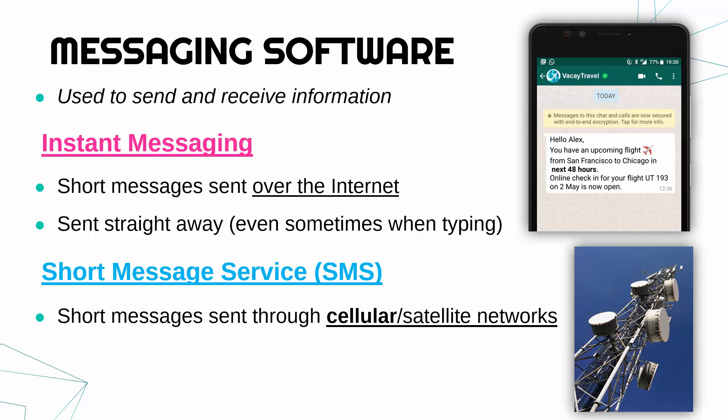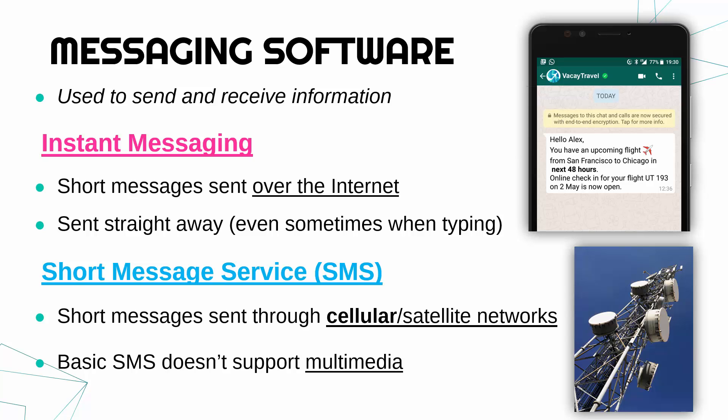Most phones support both the internet and the cellular network. If you send a text message it goes through the cellular network. Basic SMS doesn't support multimedia — where you've got a mix of images, audio, and text joined in the same message. You can send photos via text messages but that uses MMS, a Multimedia Message Service — it's a different system. SMS is very basic on its own. Instant messaging usually allows you to send longer messages, voice notes, and attachments — so it's more developed than SMS, but SMS doesn't need the internet.